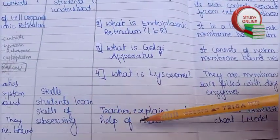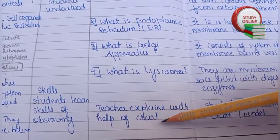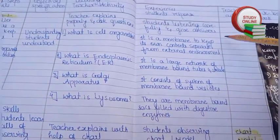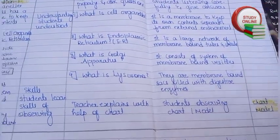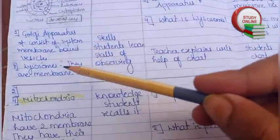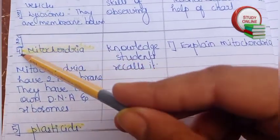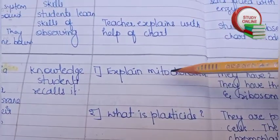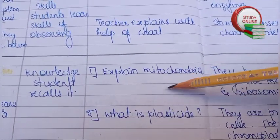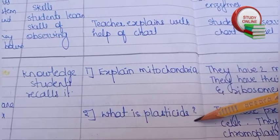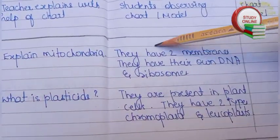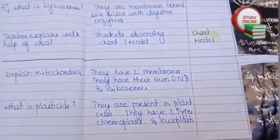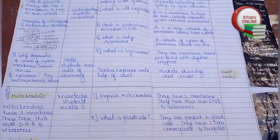Here are the skills: the teacher has to explain everything with the help of a chart or model. Students will be observing the chart or model, and for teaching aids we write down the chart or model we are going to use. Here you can see mitochondria — number four — and number five is plastids. Questions related to that: explain mitochondria, what are plastids? Here is the expected answer and the blackboard work. This is the overall look of our lesson plan.